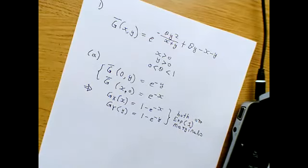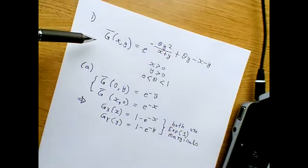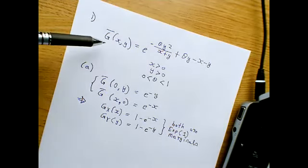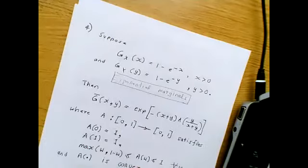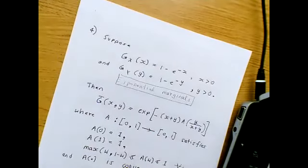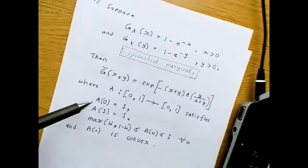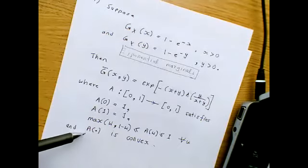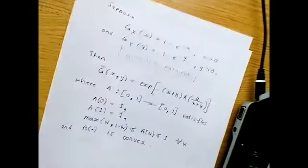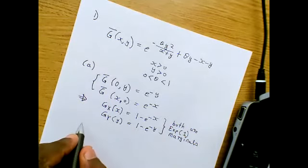In other words, to show this is a bivariate extreme value distribution, we need to show it can be represented in representation four's form, where A is a function satisfying four conditions: A(0)=1, A(1)=1, max(omega, 1-omega) ≤ A(omega) ≤ 1 for all omega, and A is convex.